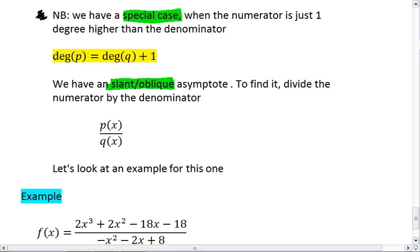Here's the special case of when the numerator is only one degree higher than the denominator. When the degree of the numerator equals the degree of the denominator plus one.